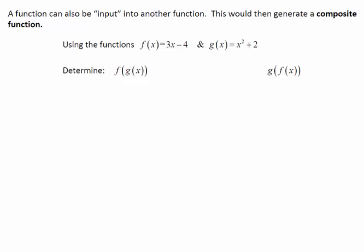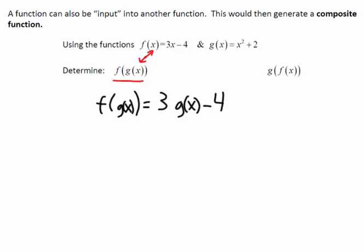With this notation — f of g of x — we're going to put into f of x the value of g of x. To start, if we're doing f of g of x, just like before we replaced x with a number, this time we're going to replace the x with g of x. Whatever is in the bracket goes inside our function.